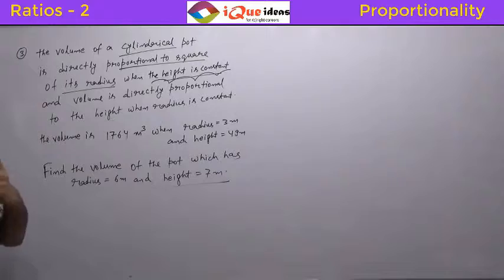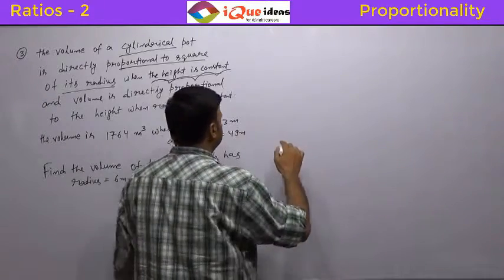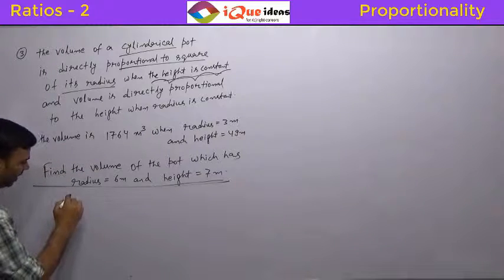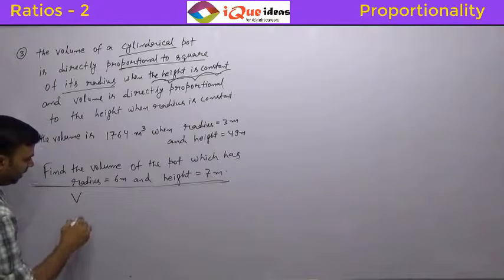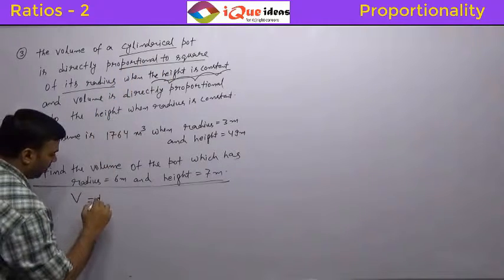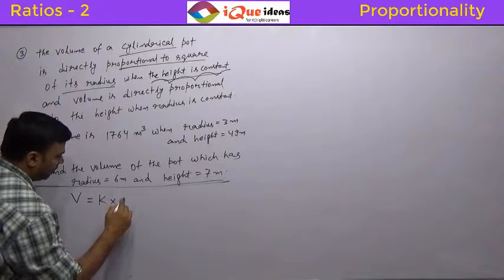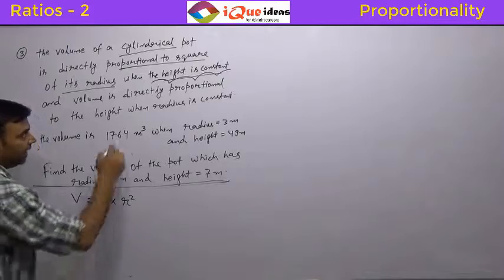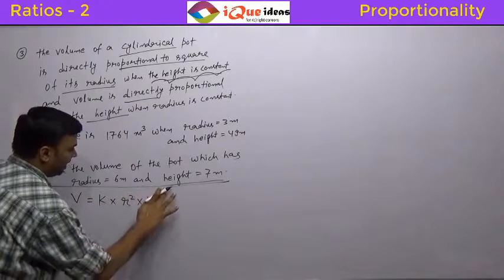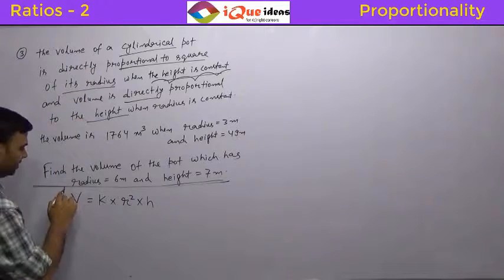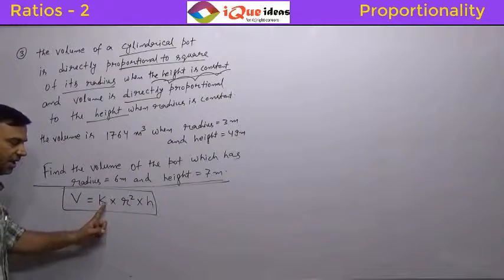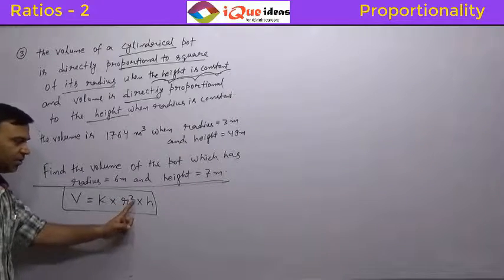The meaning is the same as what we have done earlier. Here what we are saying is that let's say the volume is V, then V is proportional to square of radius. So constant term k into square of radius is r squared and proportional to height so into h. So whenever the sentence is written like this it means this. So this is the relation that we have: V is equal to constant k into radius square into height.